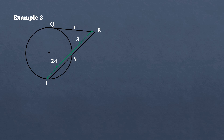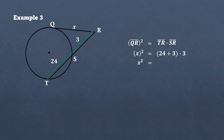Example number three. From the given figure, we form the equation: tangent segment QR squared equals the secant segment TR multiplied by external secant SR. Substituting values: for tangent segment QR we have X squared, equal to the secant segment TR with value 24 plus 3, multiplied by exterior secant SR with value 3. Distributing 3 inside the parenthesis gives 72 plus 9. Simplifying: X squared equals 81. To find X, we take the square root of both sides — the square root of 81 equals 9. Therefore, X equals 9.